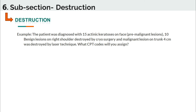What CPT codes will you assign? For benign and pre-malignant destructions, look at the number of lesions, not the anatomical site. For malignant lesions, look at anatomical site and diameter — do not add diameters. You will assign three codes: malignant lesion code first — 17264 — then pre-malignant lesion code 17004.